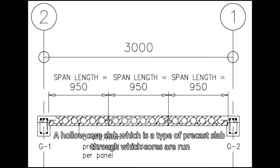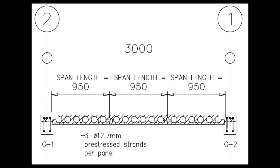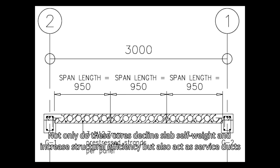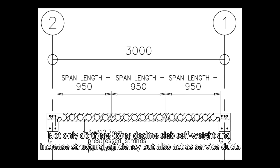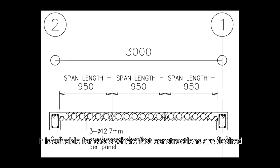A hollow core slab, which is a type of precast slab through which cores are run. Not only do these cores decline slab cells' weight and increase structural efficiency, but also act as service ducts. It is suitable for cases where fast constructions are designed.